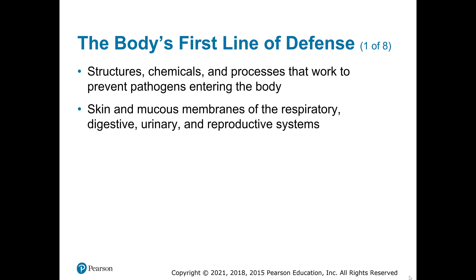For the innate immune responses, we divide them into two different lines of defense — the first and the second. The first line of defense involves some physical barriers, chemicals, and processes — mostly physical barriers — namely your skin and your mucous membranes. I'm not going to go into detail on the anatomy of those things because you get that in A&P 1, so refer back to that class if you need more detail.